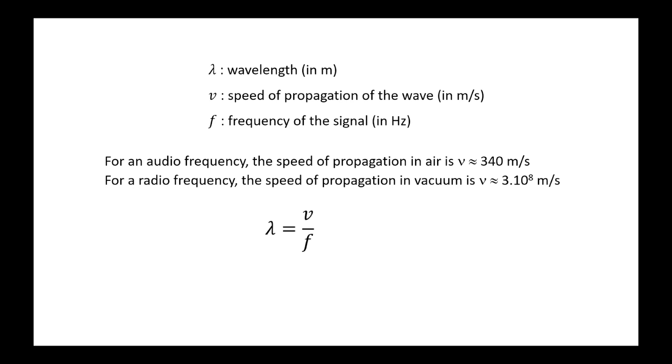We can define the wavelength as being the ratio between the speed of propagation and the frequency of the signal. For example, a radio wave at 300 kHz corresponds to a wavelength of 1 km. The wavelength of a 300 MHz signal is 1 m.